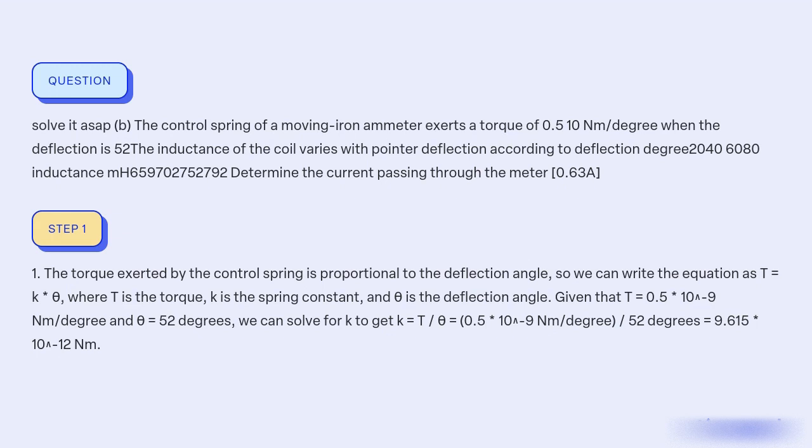Given that T = 0.5 × 10⁻⁹ Nm/degree and θ = 52 degrees, we can solve for k to get k = T/θ = (0.5 × 10⁻⁹ Nm/degree)/52 degrees = 9.615 × 10⁻¹² Nm.